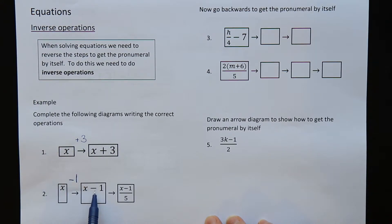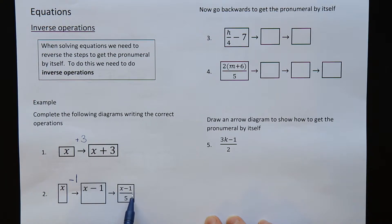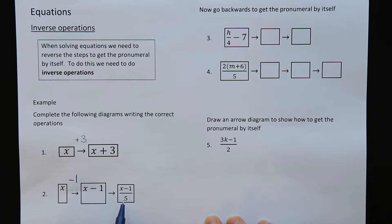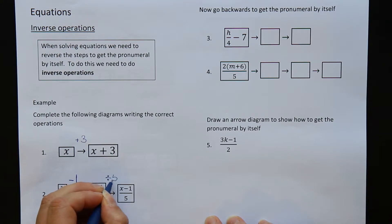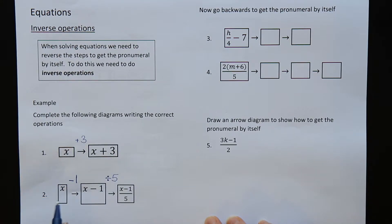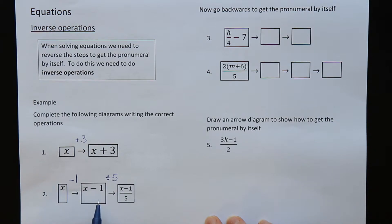Then to get from this box to the next box, I have x minus 1 here on the top, and then I've got a fraction with a 5 on the bottom. Fractions are another way of saying divide. What we are doing there is we are dividing the x minus 1 by 5. And that is what has happened to build up that expression.